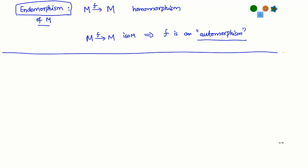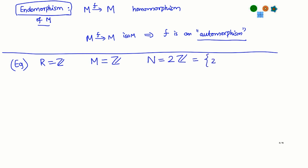So, we now know homomorphisms, isomorphisms, endomorphisms, automorphisms. Let us look at some examples of isomorphisms. If I take my ring to be the ring of integers, then modules are nothing but abelian groups. Let us take the abelian groups Z and 2Z. Here 2Z is the set of all even integers. This is a submodule of Z. Observe that even though 2Z is a submodule of Z, they are actually isomorphic to each other.